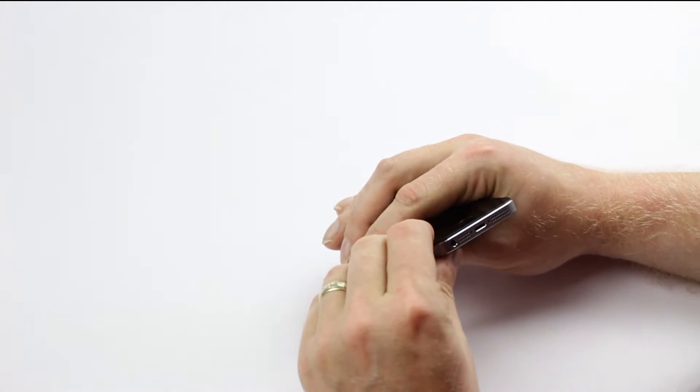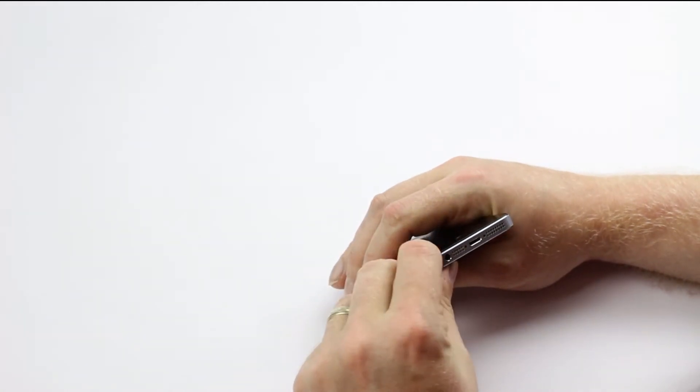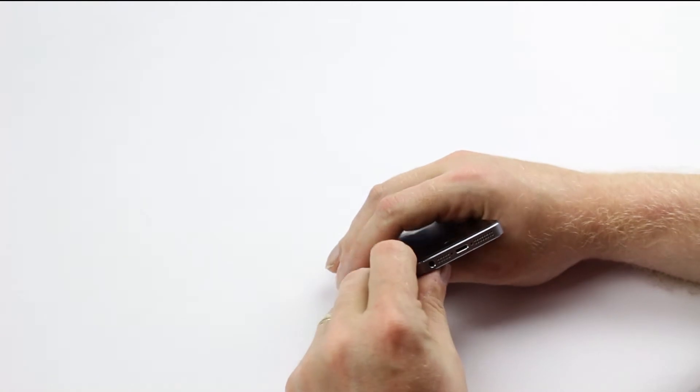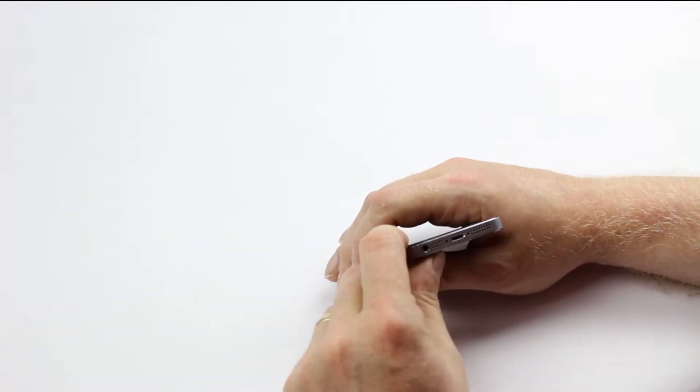Just make sure when you take the phone to pieces that you put all of the screws in a safe place, so they don't get lost, and that they're also easy to remember where they go back afterwards.